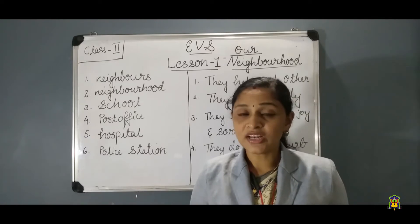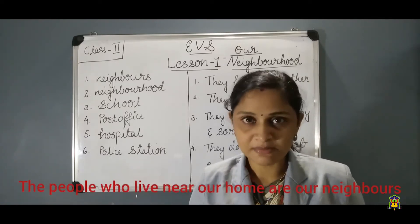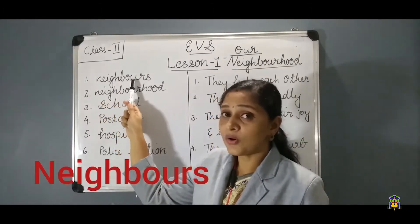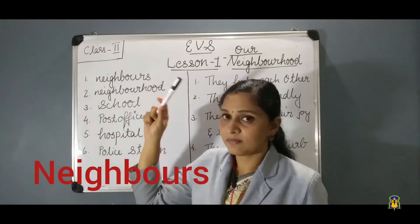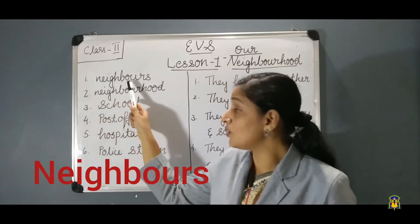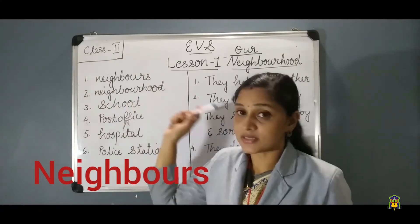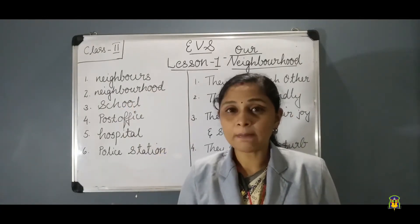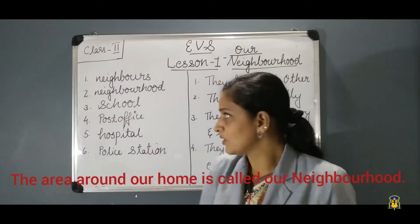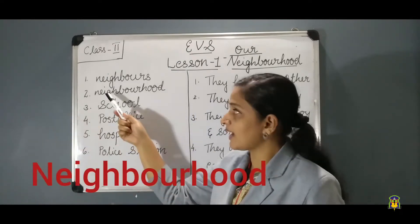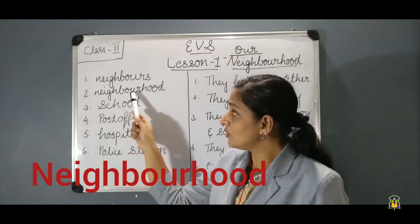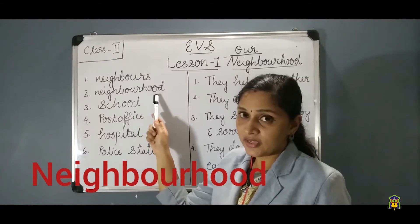The people who live near our home are our neighbors. What is the spelling of neighbors? N-E-I-G-H-B-O-U-R-S. Please read with me children: Neighbors. And the area or the places near our home is called our neighborhood. The spelling of neighborhood is N-E-I-G-H-B-O-U-R-H-O-O-D. Neighborhood.